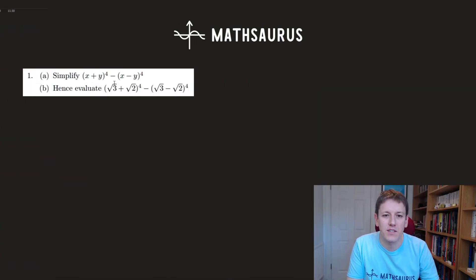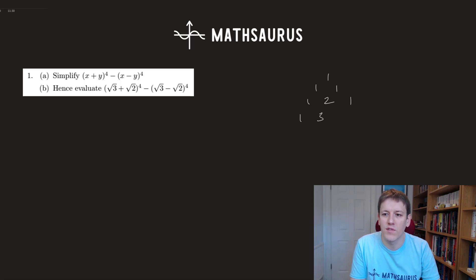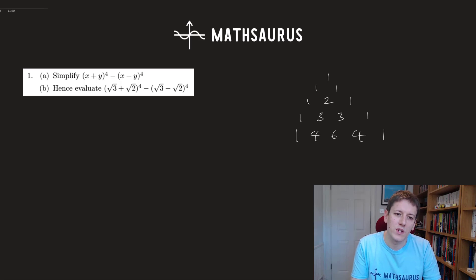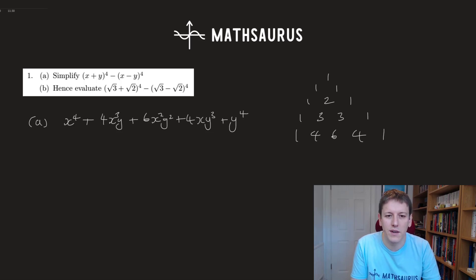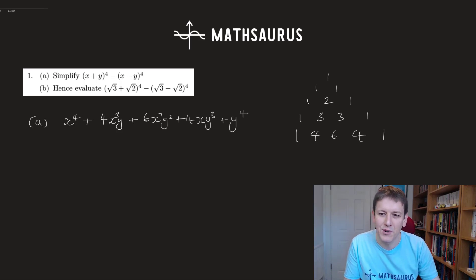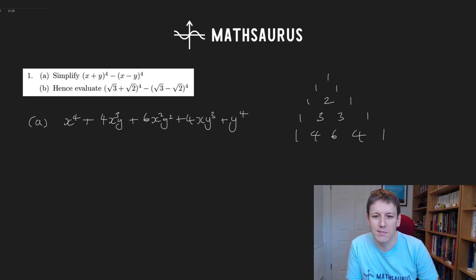So in question one, we want to simplify (x + y)^4 minus (x - y)^4. It's a fourth power, so we're going to use the fourth row of Pascal's triangle: 1, 4, 6, 4, 1 — remembering the first row is the zeroth row for the coefficients. So we start with x^4 + 4x³y + 6x²y² + 4xy³ + y^4, increasing the powers of y and decreasing the powers of x as we go along.